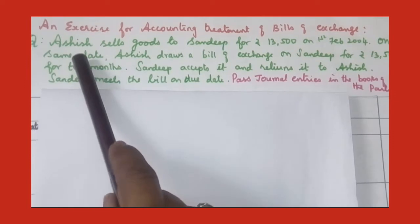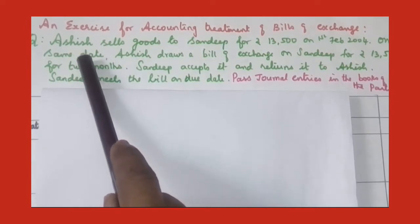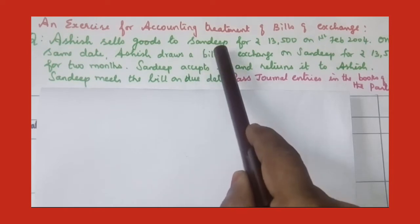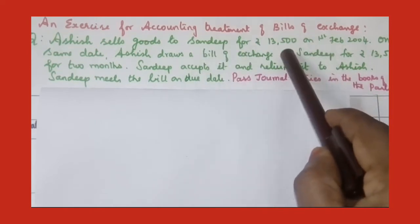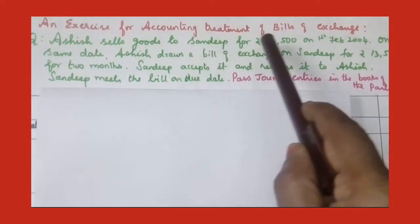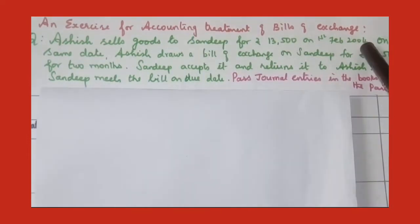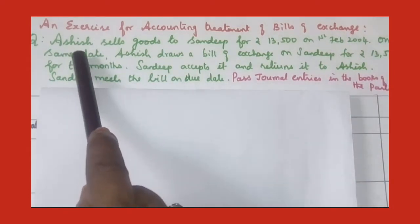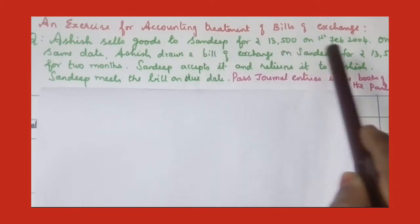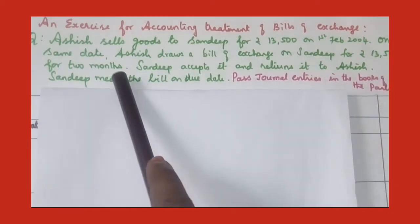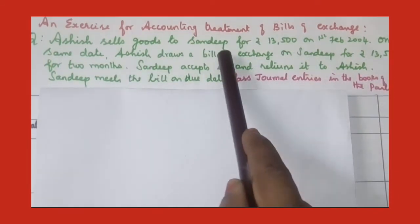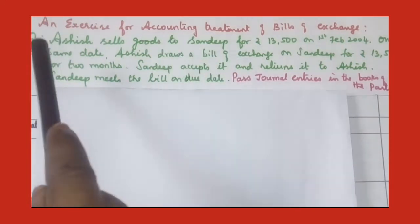Ashish sells the goods, so Ashish is the seller — he will draw the bill, so he is the drawer. And Sandeep purchases the goods and he is the drawee. Now, Ashish sells the goods to Sandeep for Rs. 13,500 on February 2014. On the same day, Ashish, the drawer, draws the bill of exchange on Sandeep for the same amount.